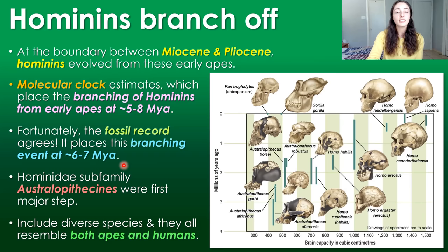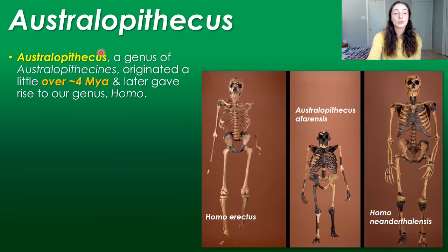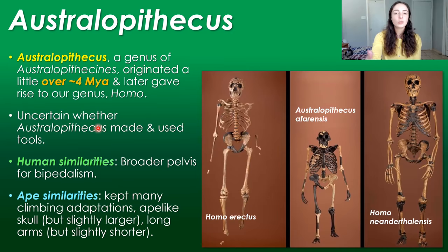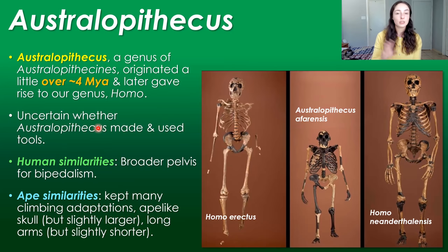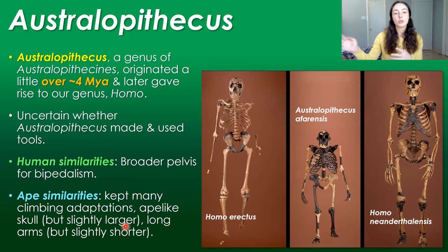The Hominidae subfamily australopithecines was the first major step toward human evolution. This subfamily included diverse species that all had both ape and human traits. Australopithecus, one genus of the australopithecines, originated a little over four million years ago and later gave rise to our Homo genus. It's uncertain whether australopithecines made and used tools. They had human similarities including a broader pelvis important for bipedalism and slightly bigger brains, but retained ape climbing adaptations like longer arms and a more ape-like skull — slightly larger than previous apes but moving toward a human-sized skull.